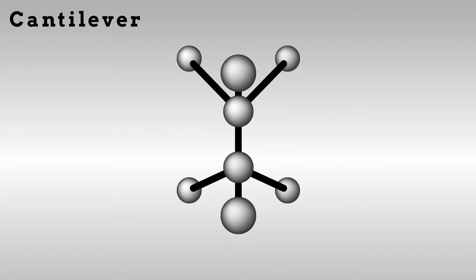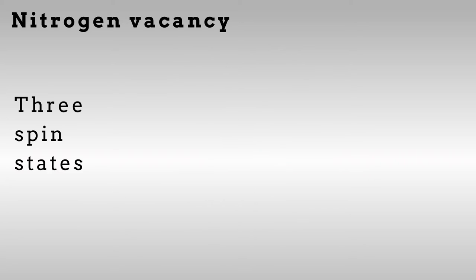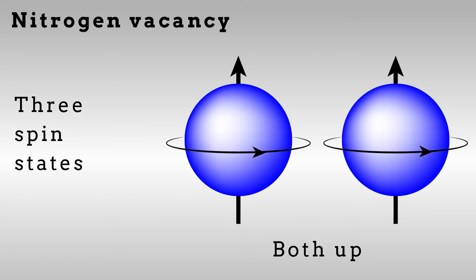The necessary spin system is prepared by replacing a carbon atom in the diamond structure with a nitrogen, and then knocking out another nearby carbon to make a vacancy. This nitrogen vacancy defect provides three spin states for a pair of electrons—both up, both down, or one up and one down.